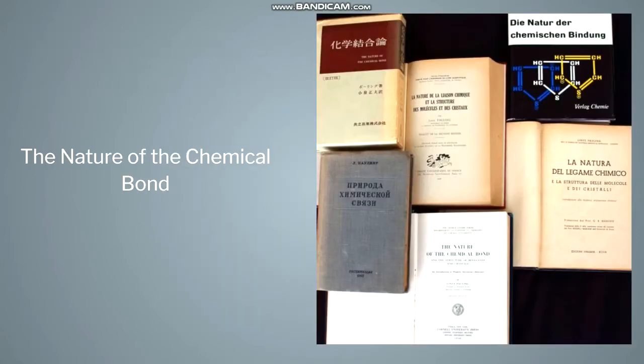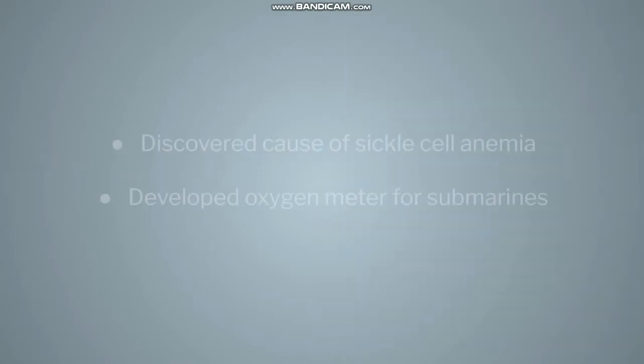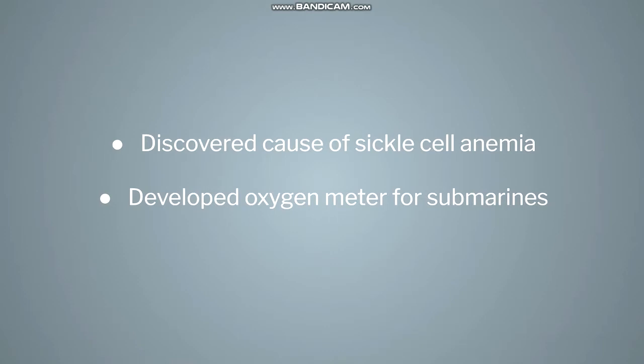His most notable work of literature is The Nature of the Chemical Bond, where he outlines a measurement system to determine the tendency of an atom to attract a bonding pair of electrons. Some of his lesser-known achievements are discovering the cause of sickle cell anemia and developing an accurate oxygen meter for submarines.